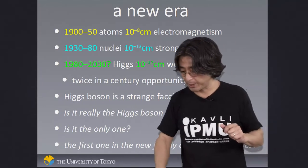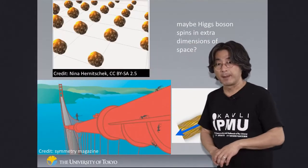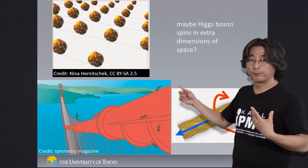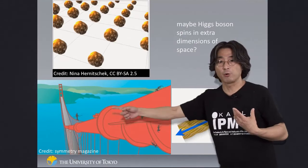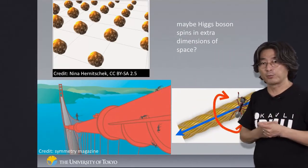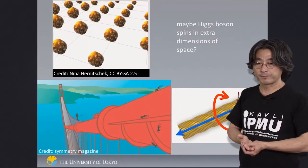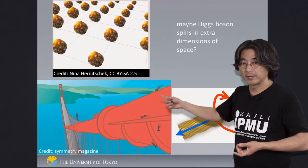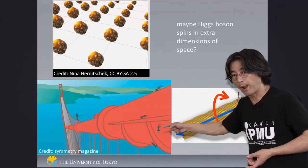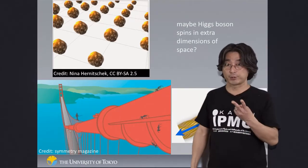I mentioned extra dimensions — maybe we live in a universe with extra dimensions. Consider a person walking on the rope of the Golden Gate Bridge: they can only go forward and backward — essentially one spatial dimension. But for a little ant living on the wire, it can not only go forward and backward, it can also walk around the cable — so the ant sees two spatial dimensions.